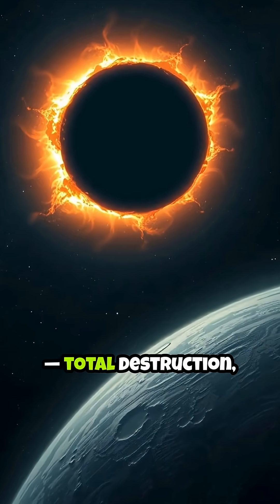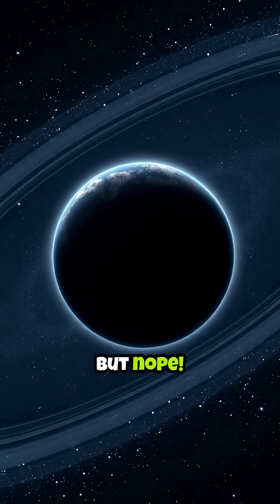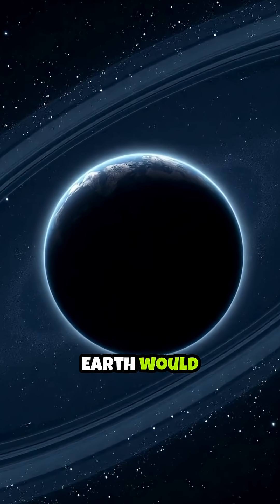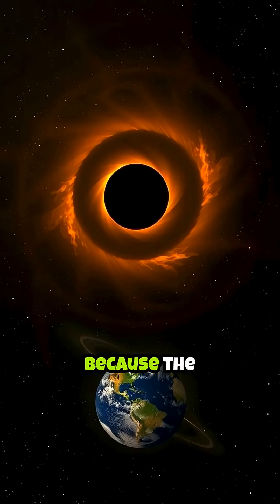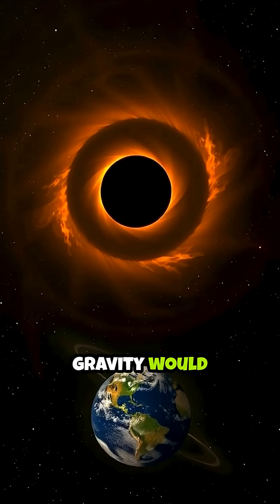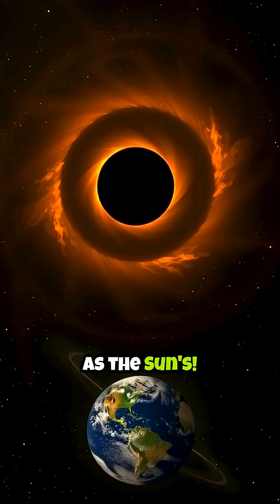You'd think total destruction, right? But nope. Earth would keep orbiting like nothing happened. Why? Because the black hole's gravity would be the same as the sun's.